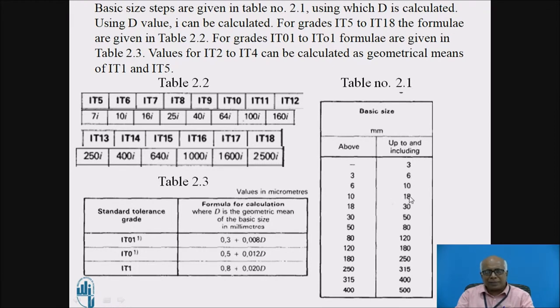So for this basic size, the two limits are 10 and 18, so that capital D value will be calculated as square root of 10 multiplied by 18. So that way we can calculate for each basic size. And the upper step is contained in that particular class. If it is 30, then that will be considered lying in this class 18 to 30. So that way we calculate for the value of D, substitute the value of D in the formula of I and then we calculate the value of I.